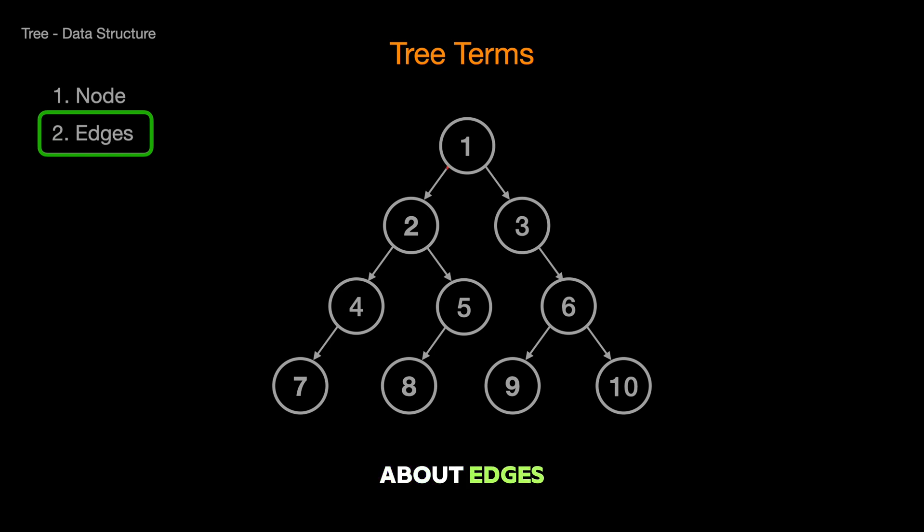Next, let's talk about edges. An edge is the connection between one node and another. It represents the relationship in a tree, like the bond between a parent and its child. Without edges, we wouldn't have a tree, just a bunch of unconnected nodes.